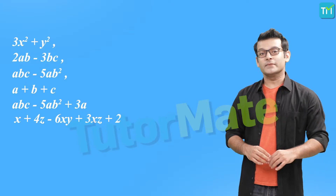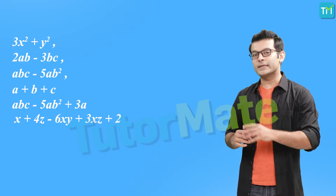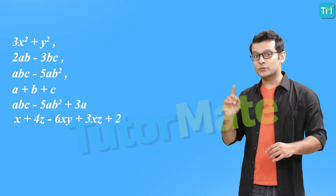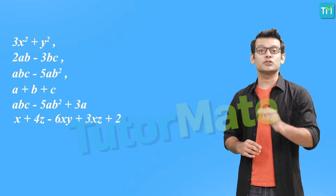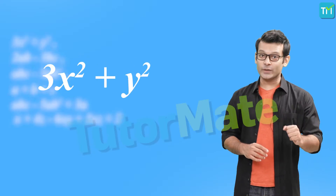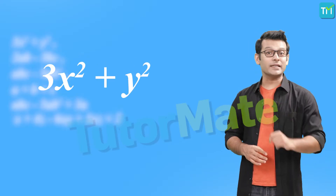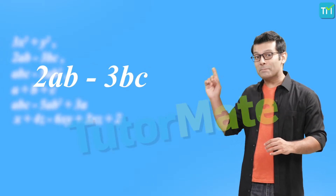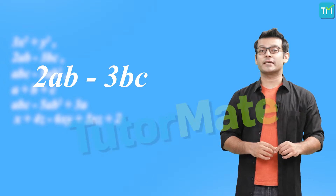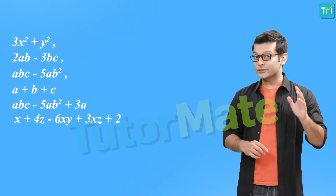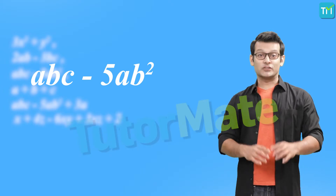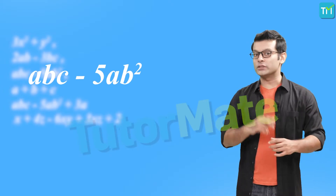Have a look at all these expressions. Can you tell me what's common amongst them? 3x square plus y square is an algebraic expression having two terms: 3x square and y square, separated by a plus sign. Similarly, 2ab minus 3bc is also an algebraic expression having two terms, and so is abc minus 5ab square. So all three of these expressions have two terms.